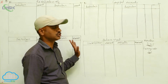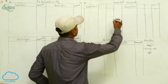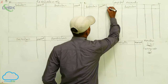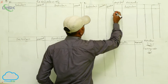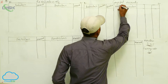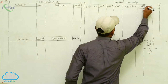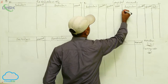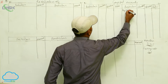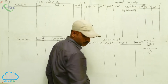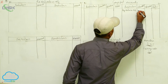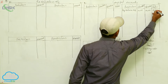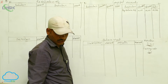So first we write the problem. We will start with capital accounts. Credit side: by balance brought down — that is 30,000 for Chandra, 20,000 for Bhaskar, and 20,000 for Rahu. These are the opening capitals of the partners.